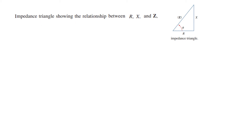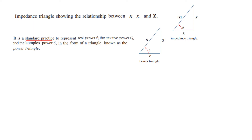We have learned that the impedance triangle represents resistance, reactance, and impedance. In exactly the same way, we use a power triangle to represent three types of power: real power P, reactive power Q, and complex power — also called apparent power. The power triangle is used for studying power.